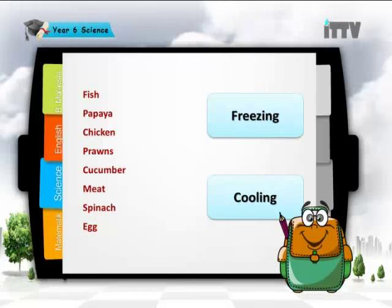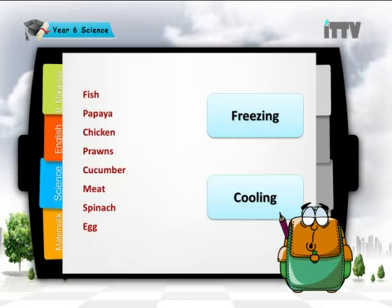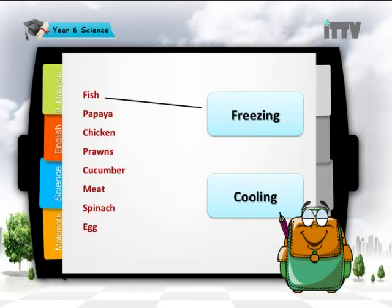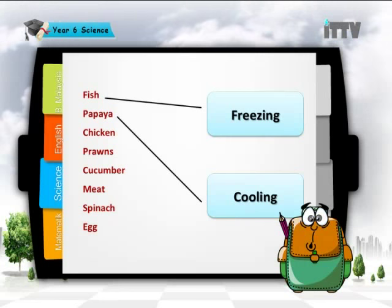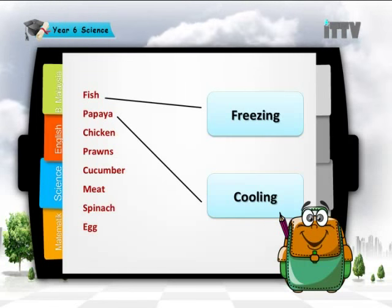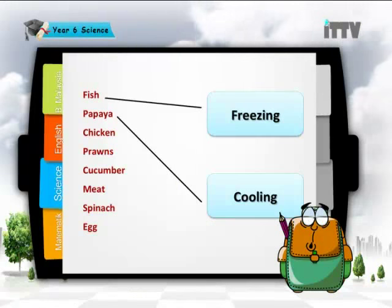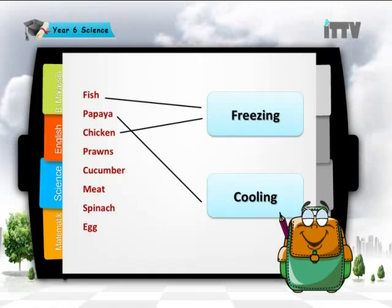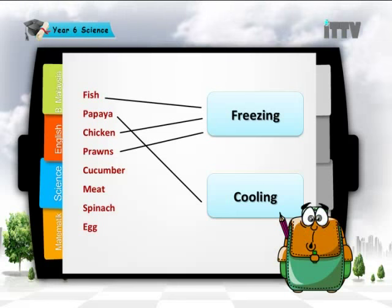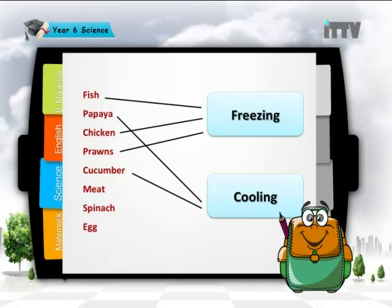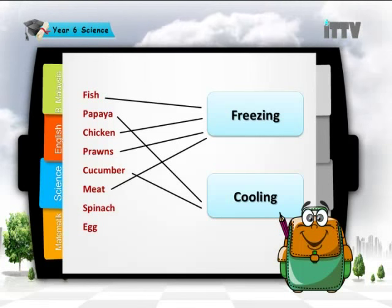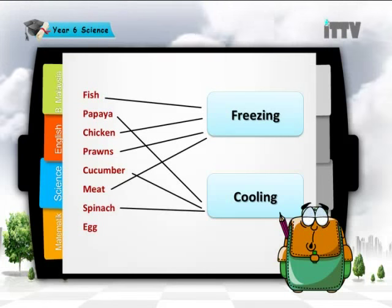Let's sort the items: fish goes into freezing. Papaya — cooling. Fruits are usually put into the cooling part, but you do not freeze them. Banana is an exception and is more appropriate to leave outside the fridge. Chicken — freezing. Prawns — freezing. Cucumber — cooling. Meat — freezing. Spinach — cooling. Egg — cooling.